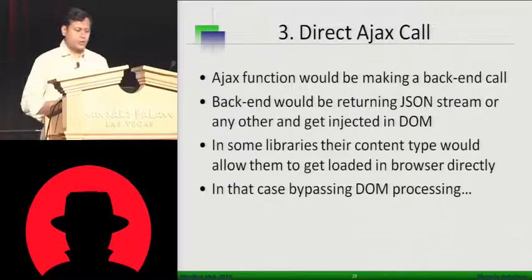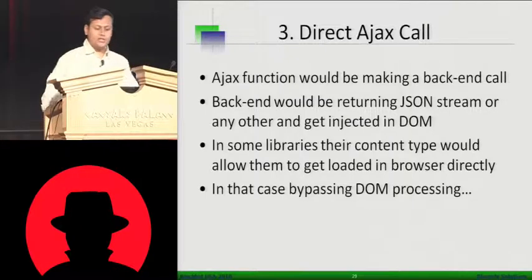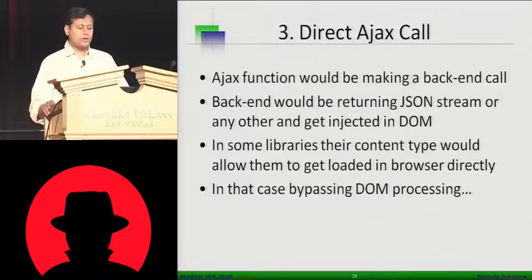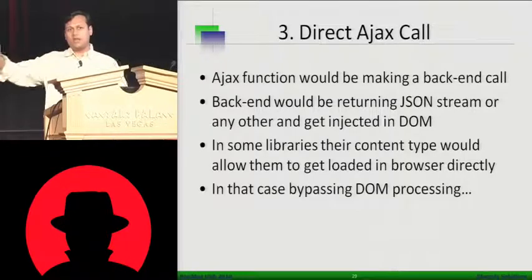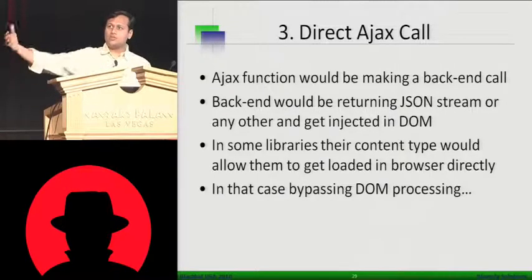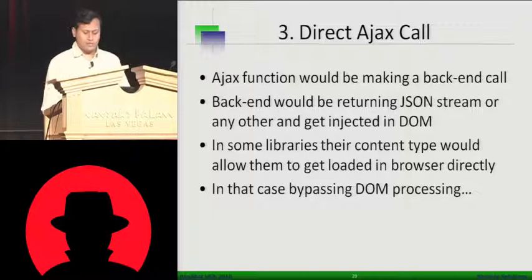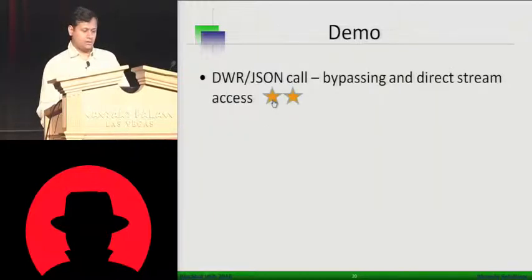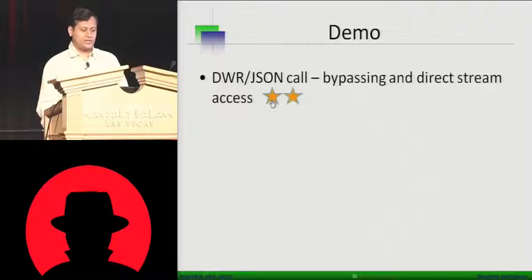The third type is very interesting: you have a direct Ajax call — an Ajax function making a back-end call. The back-end returns a JSON stream or something else which gets injected into the DOM. In some libraries, their content type would allow them to load directly into the browser. For example, a server-side library is sending XML content but the content type is text/HTML, or it sends JSON but the content type is text/HTML rather than text/JSON. That stream will hit the browser and get executed.